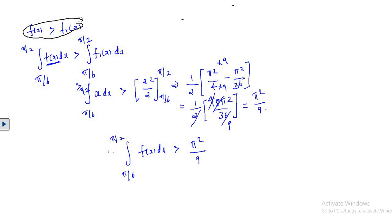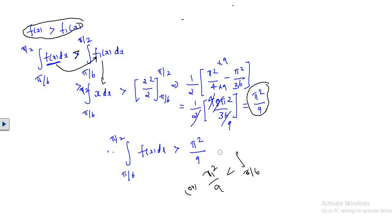Since f(x) is strictly greater than f1(x), we have the integral from π/6 to π/2 of f(x) dx is greater than the integral of f1(x) = x dx. Integrating x gives x²/2; evaluating from π/6 to π/2 and simplifying gives π²/9. Therefore we obtain π²/9 < ∫(π/6 to π/2) f(x) dx. This proves the lower bound.